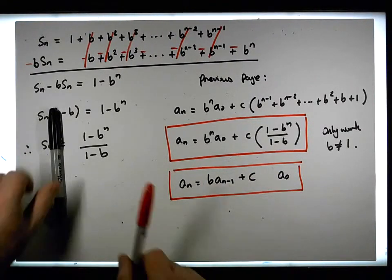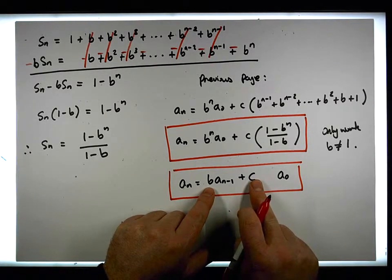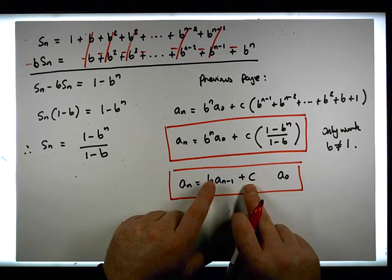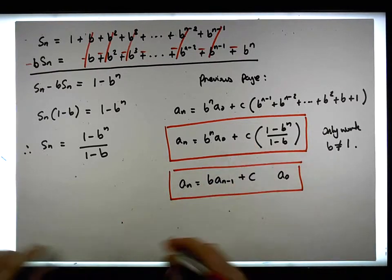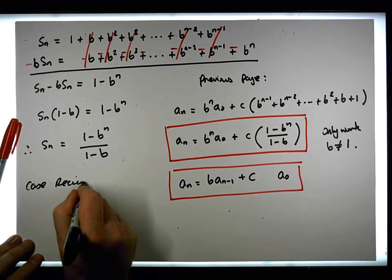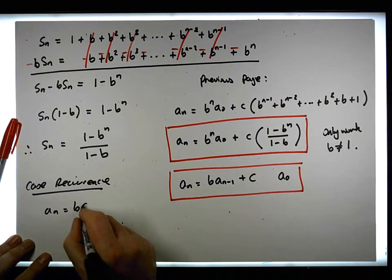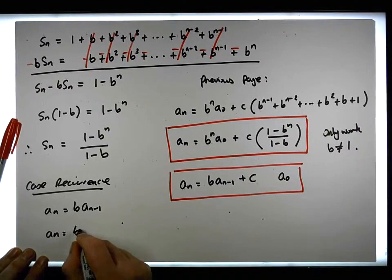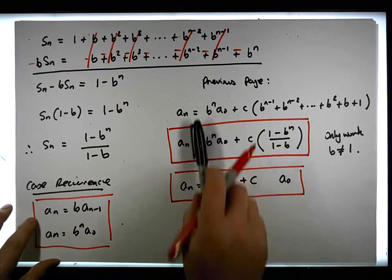In the previous video I looked at the case when b was equal to one and c was equal to zero, and we found that solution — so we've dealt with the case when b equals one. When c is equal to zero, the recurrence takes the form a_n equals b times a_{n minus one}, and we have that a_n must equal b to the n times a zero.